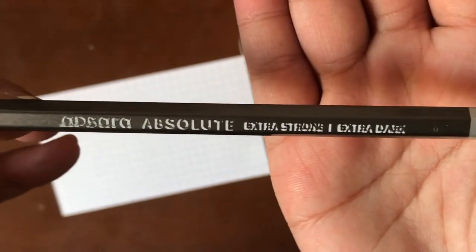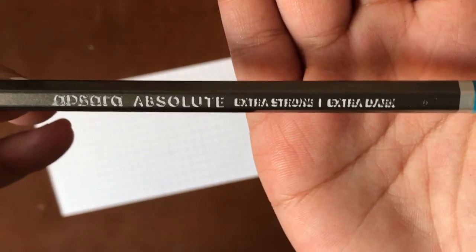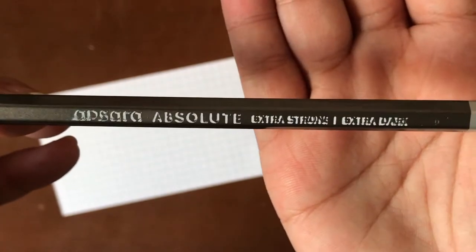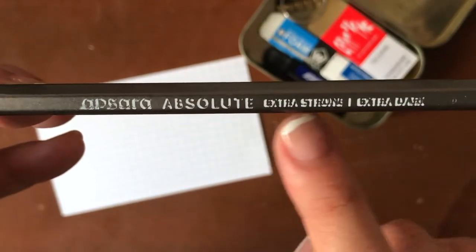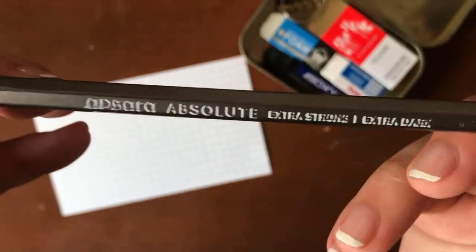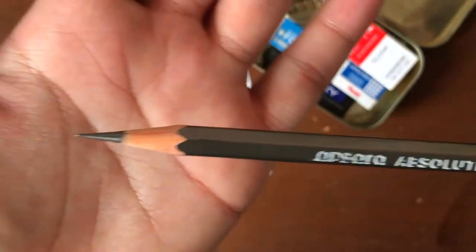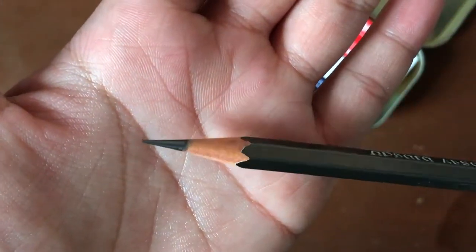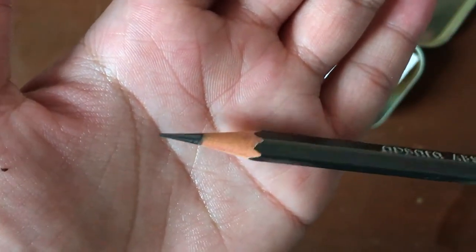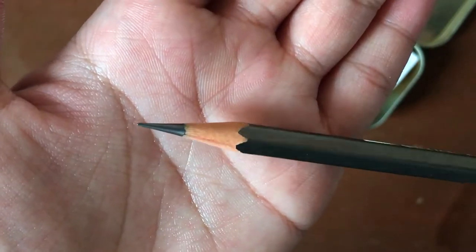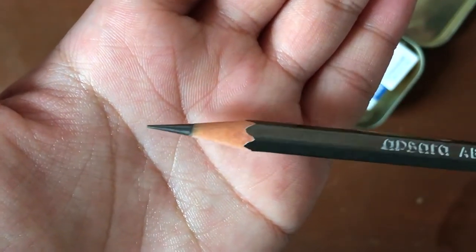The Apsura Absolute, and it says right next to it, extra strong and extra dark. You can see there's a little bit of fading because I use this pencil so much. And finally, one of the coolest features is look at that core. It is really thick. I'm really excited to be showing you how much power this baby packs.